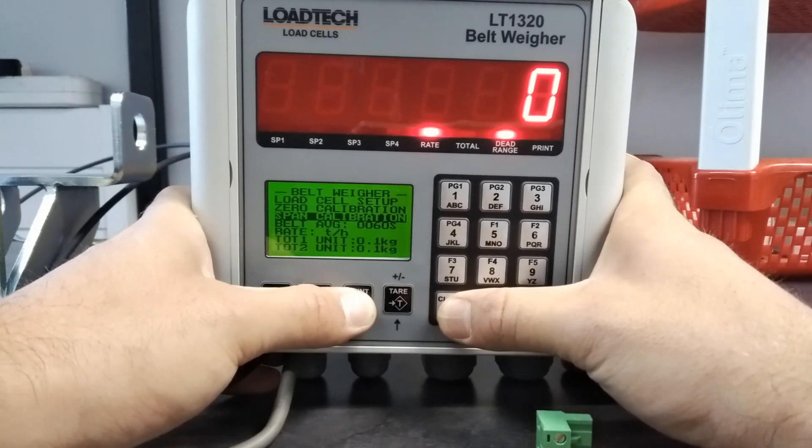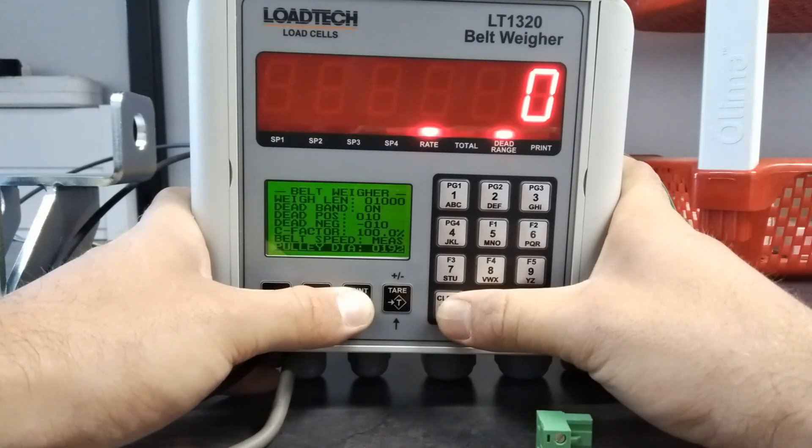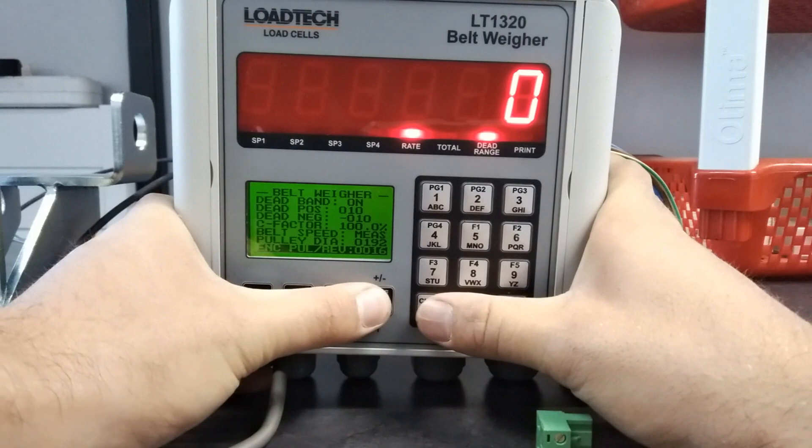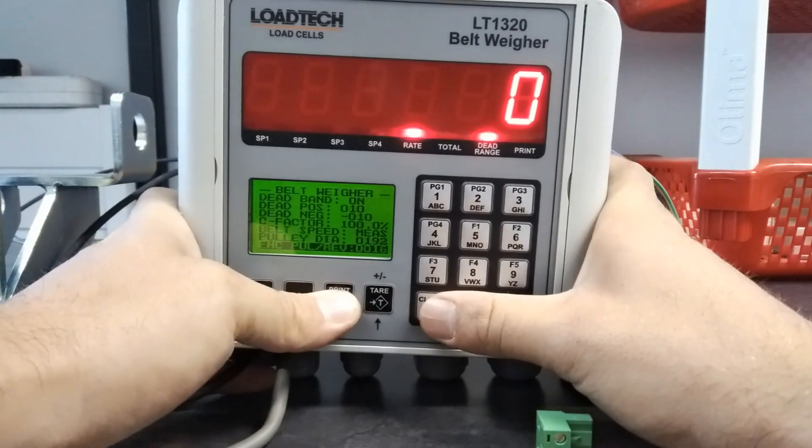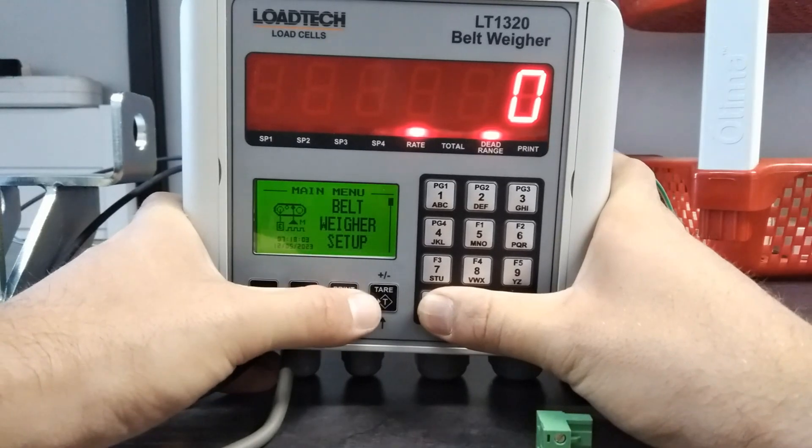Before you do this however, be sure to change the following two parameters. Change this value to 192 and this value to 16 if you've bought the Loadtech tachometer as well. Once you're sure you've done that, you can start your zero and span calibration.